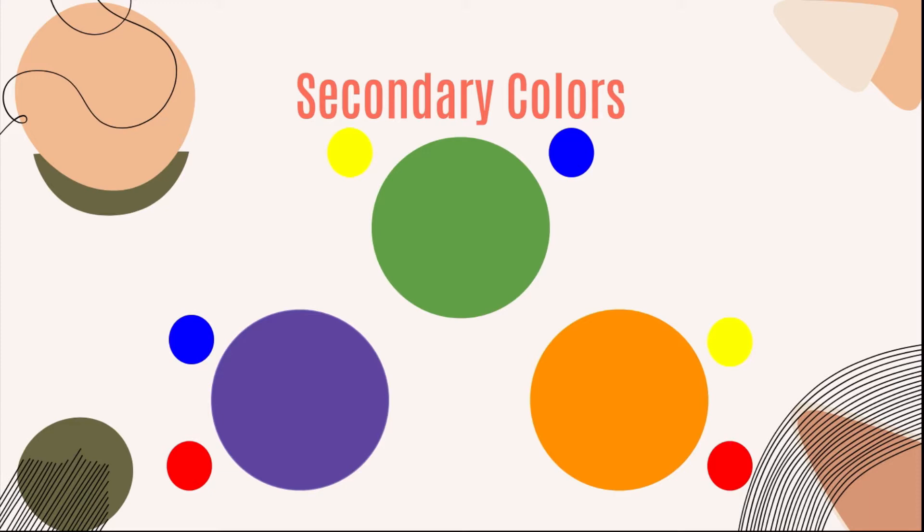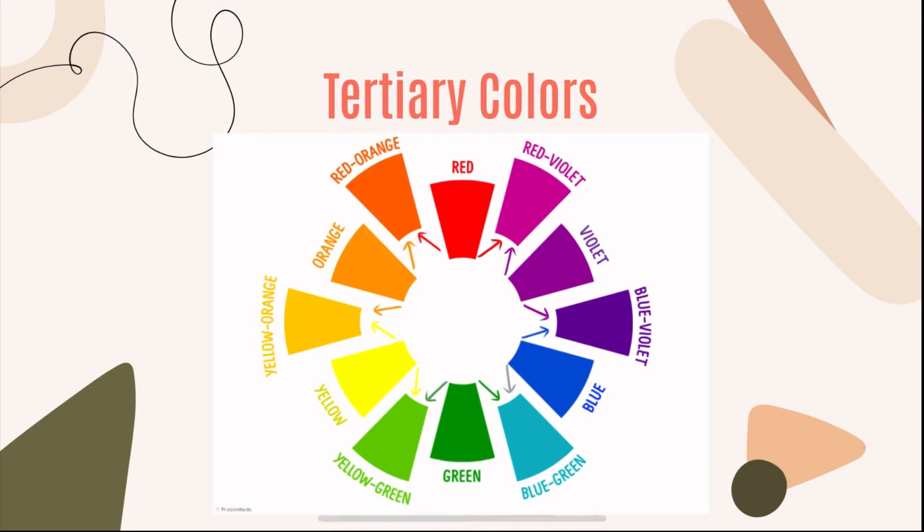And here we have our tertiary colors. With our tertiary colors, they need a primary and a secondary. So we have red orange, red violet, blue violet, blue green, yellow green, yellow orange. And that's all six of our tertiary colors.